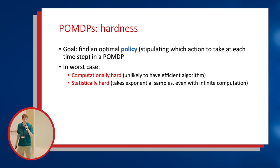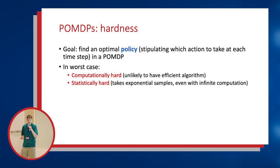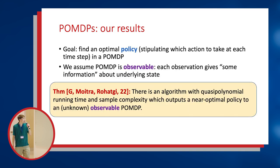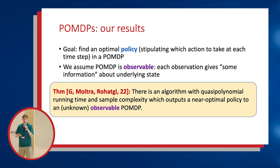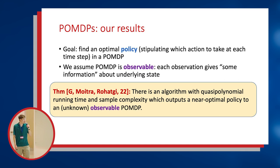The goal in studying POMDPs is to find a near-optimal policy which stipulates what action to take as a function of the entire history of interaction. Unfortunately this problem is very hard. There are both computational lower bounds — under certain well-believed complexity-theoretic assumptions it's unlikely we can find an efficient algorithm — and statistical lower bounds which say we need exponential samples. However, we can prove there is an efficient learning algorithm under an assumption that the observation gives sufficient information about the underlying state, which we call observability.